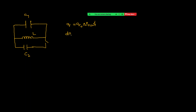Now if you differentiate this — DQ by DT — that gives current, which is the rate at which charge on the capacitor is increasing. That equals Q0 ω cos(ωt). Now when T equal to 0, the cos function is maximum, meaning current is maximum. When the cos function is maximum, the sin function is 0. That means when charge is 0, current is maximum. So the given I0 is itself the maximum current.